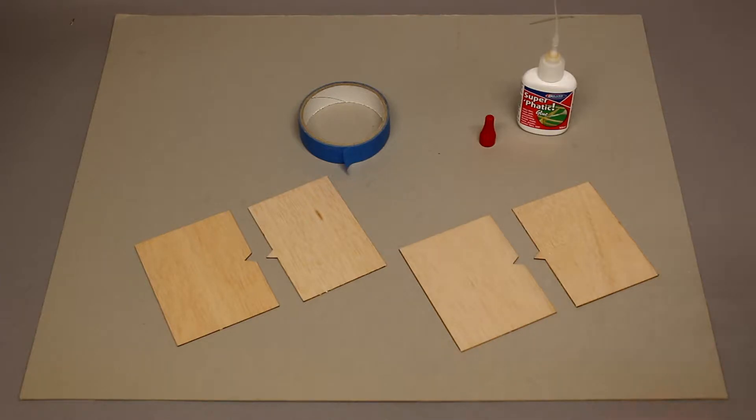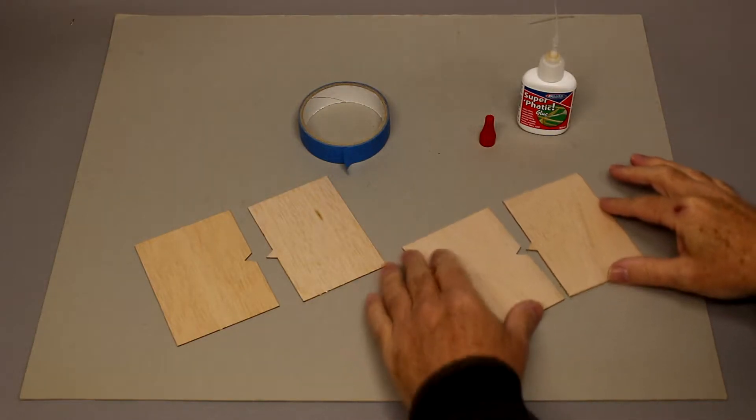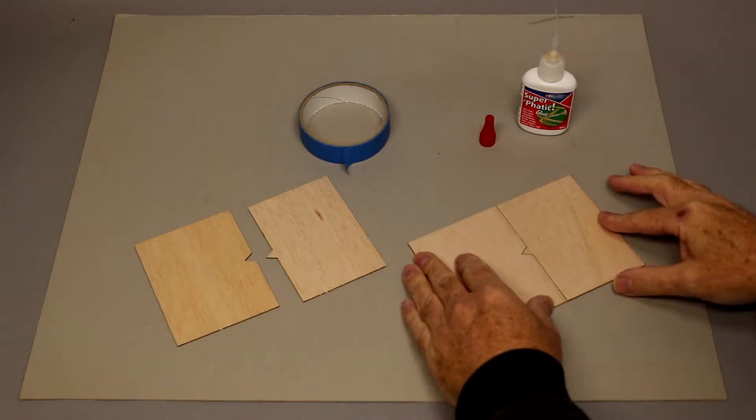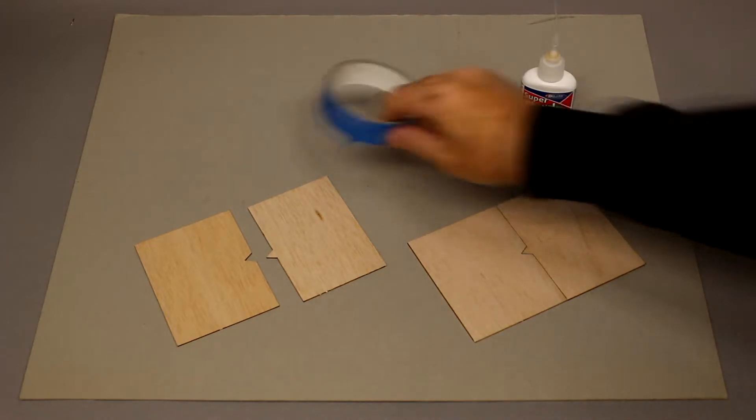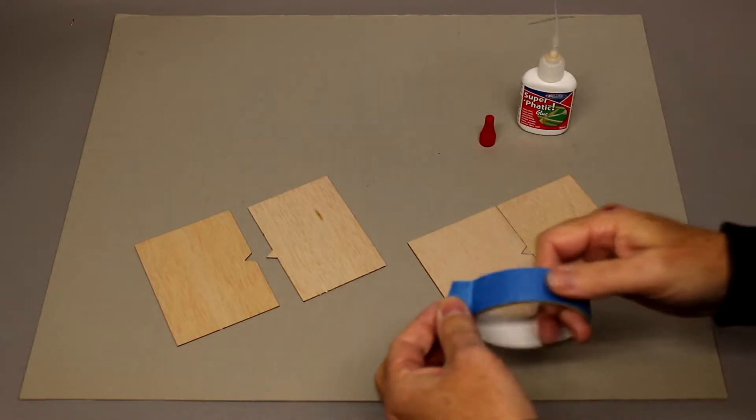Now the technique itself is pretty simple. We will bring the two pieces of material together. I've already sanded the edges to make sure we've got a nice clean fit. We will then take some masking tape, tear off a length, pressing the two pieces together.